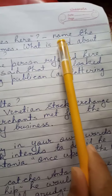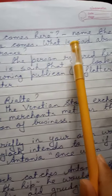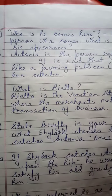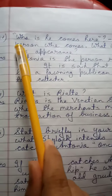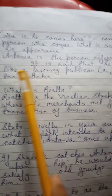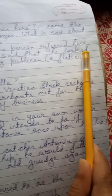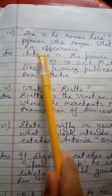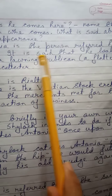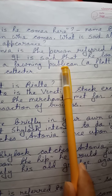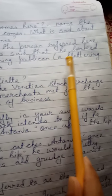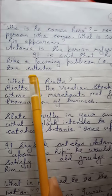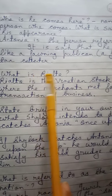The next question: Who is referred to by 'he comes here'? Name the person and state what is said about his appearance. Antonio is the person referred here. It is said that he looked like a fawning publican, meaning a flattering tax collector.